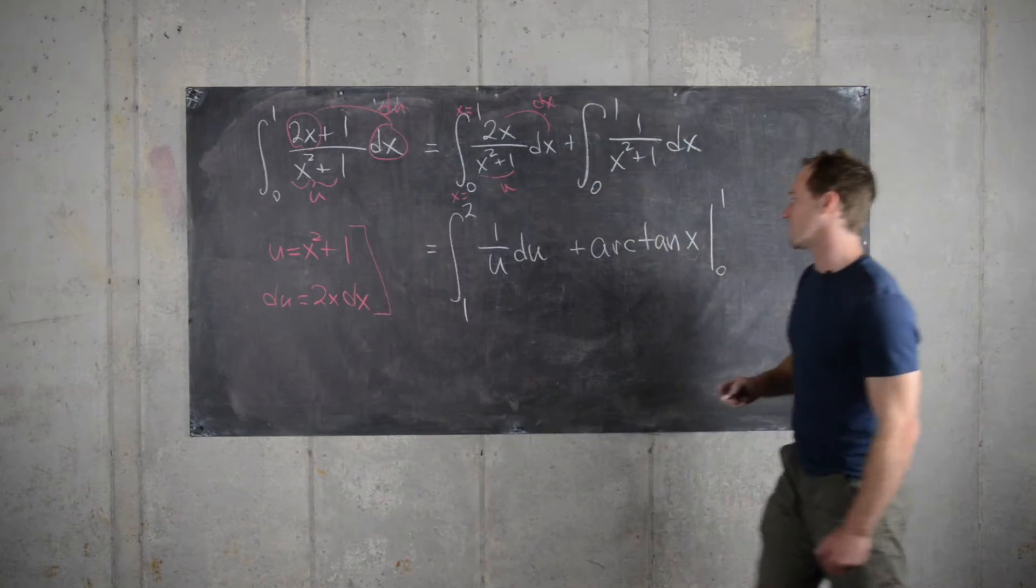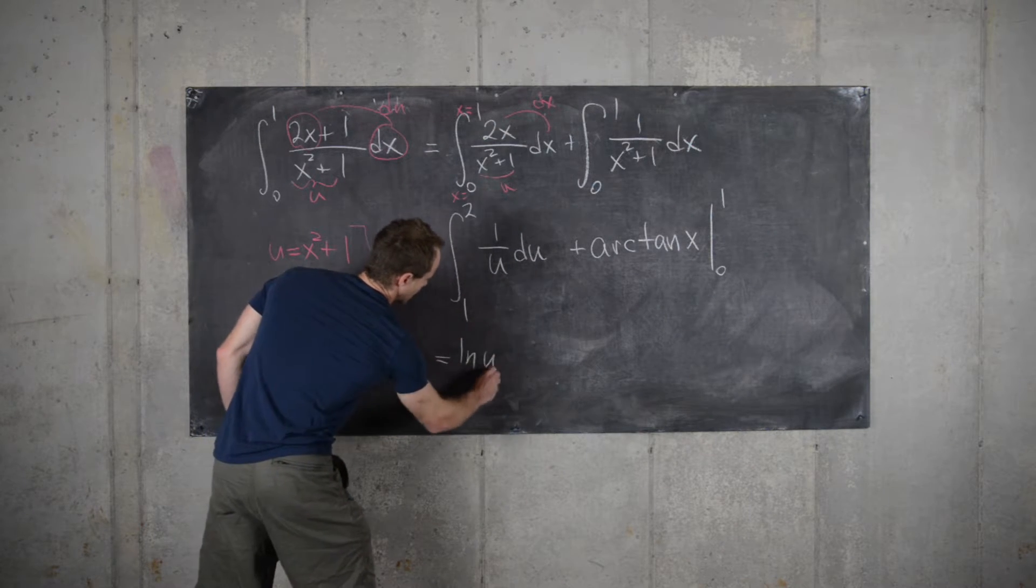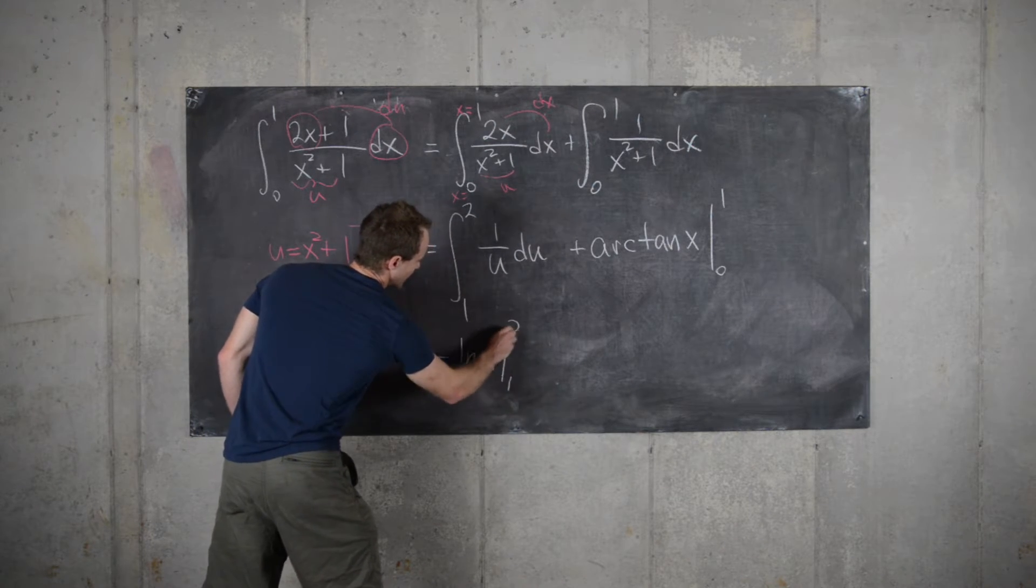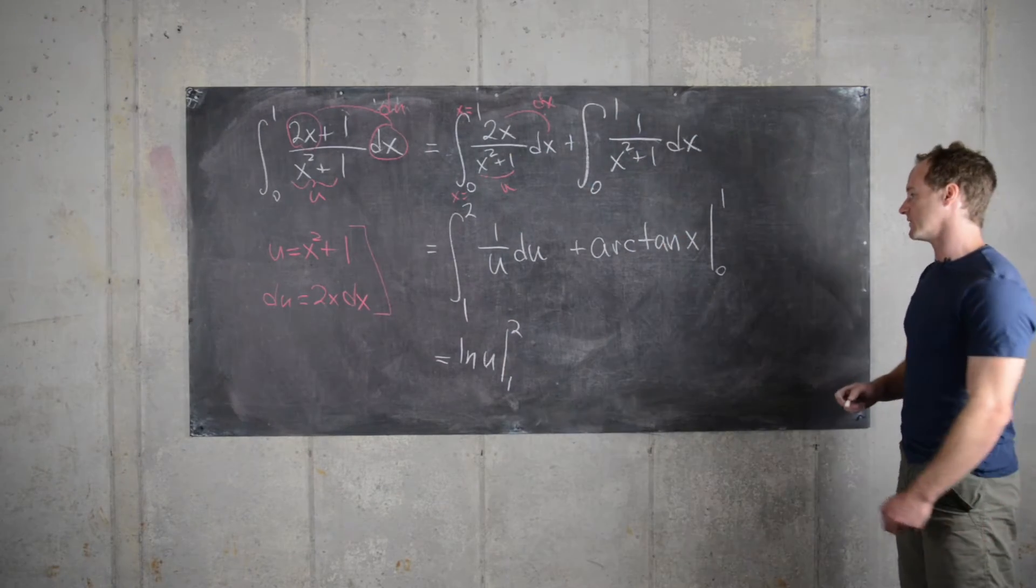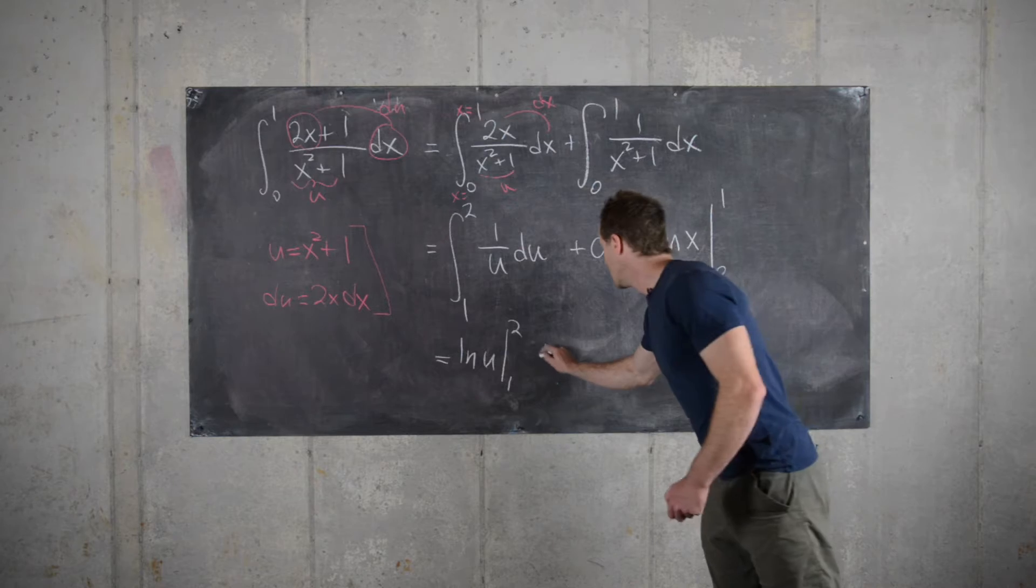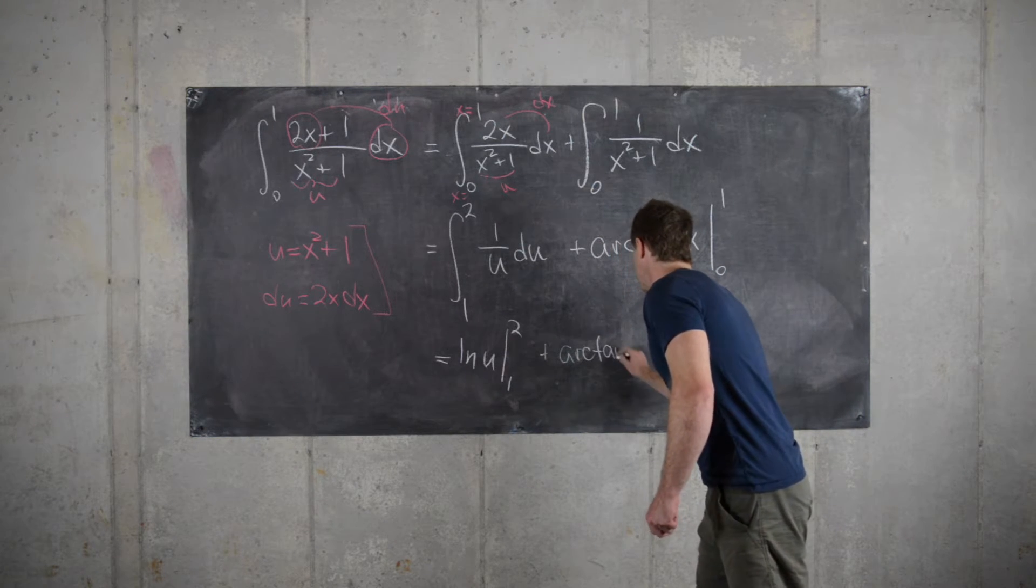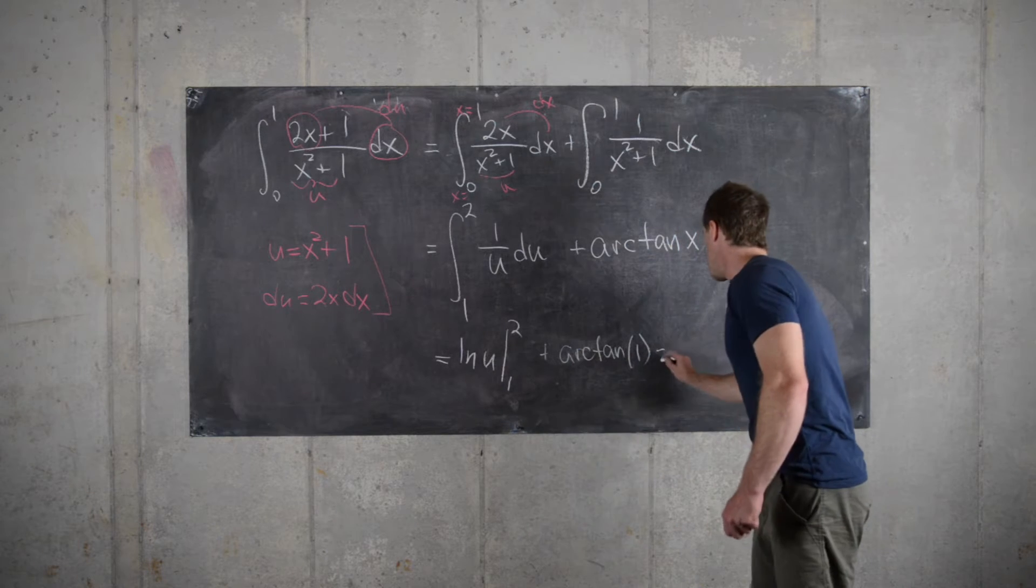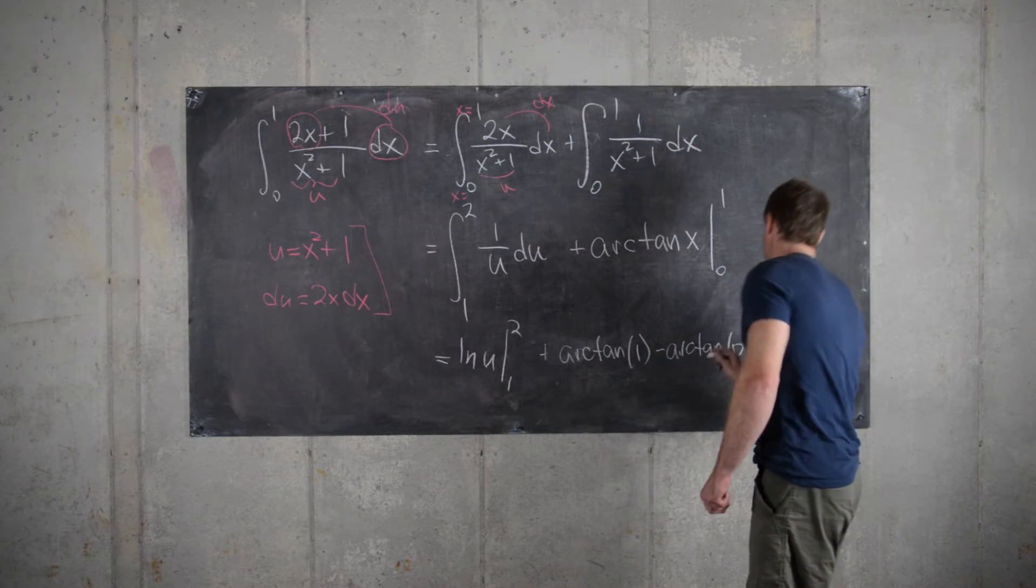Okay, great, so now let's finish it off. So this is obviously going to give us the natural log of u, evaluated from 1 to 2. I'll leave off the absolute values because we're in a positive part of the domain. And then this is going to be plus the arctan of 1 minus the arctan of 0.